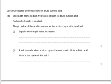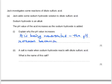Here's a past exam question on acids and alkalis. Jack investigates some reactions of dilute sulfuric acid. Jack adds some sodium hydroxide solution to some dilute sulfuric acid. Sodium hydroxide is an alkali. The pH value of the acid increases as the sodium hydroxide is added. Explain why the pH value increases. We could say it is being neutralized. The pH increases because sodium hydroxide is an alkali.